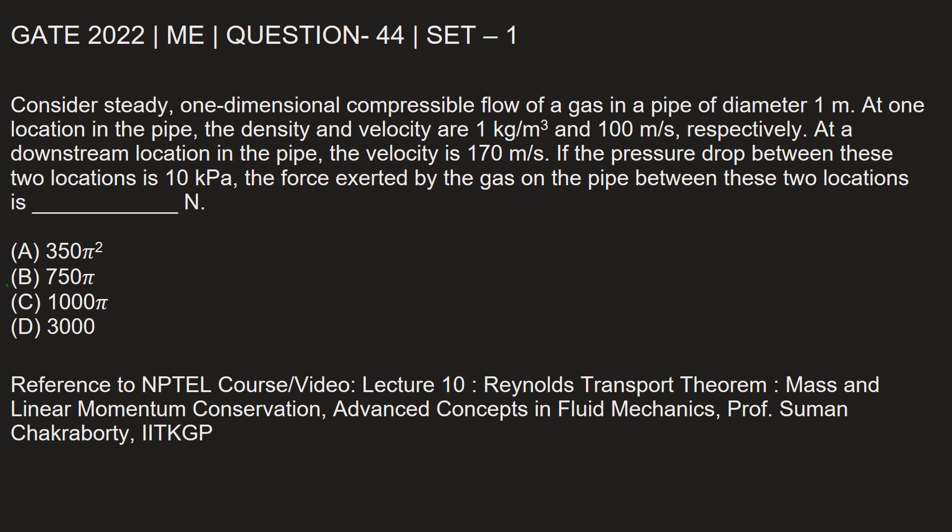Our answer is option B. If the pressure drop between these two locations is 10 kilopascal, force exerted by the gas on the pipe between these two locations is 750 pi.